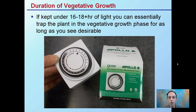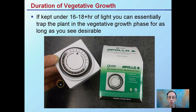In order to maintain 16 to 18 plus hours of light, you need a quality timer. You need to keep the plant in the vegetative growth phase as long as you see desirable. If you set the timer to 16 to 18 hours of light and keep it at that phase without changing it, your plants will continue to grow in the vegetative phase. As soon as you flip the timers, that can cause them to go into flower. If you have a timer that malfunctions, that's something to keep an eye on because that can also cause them to go into flower prematurely.